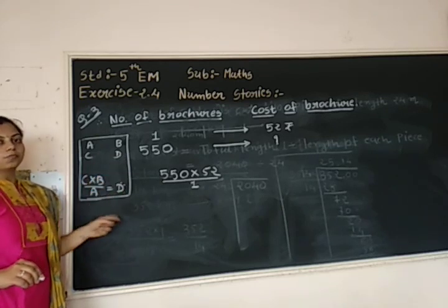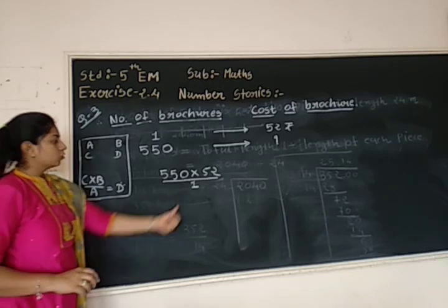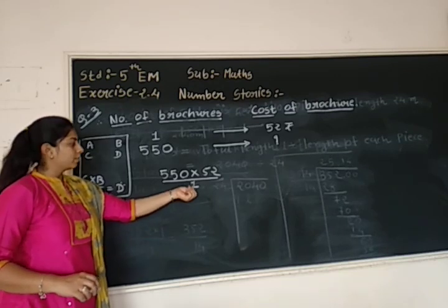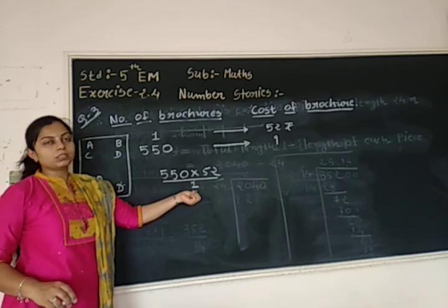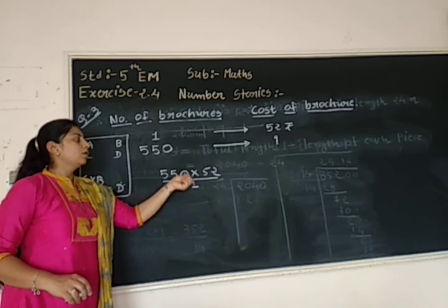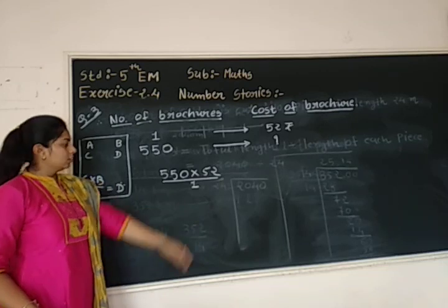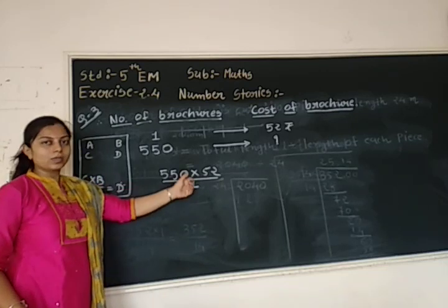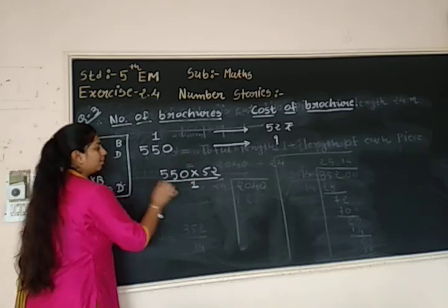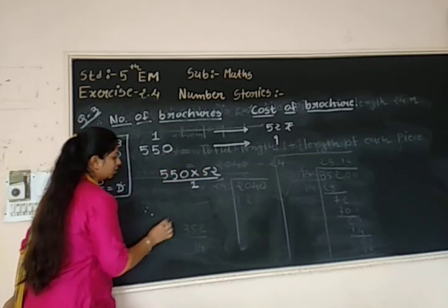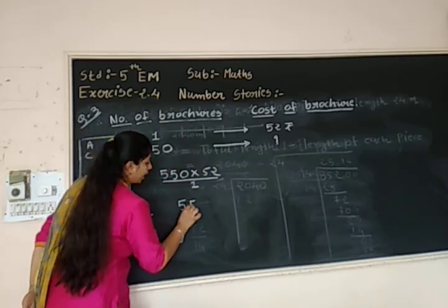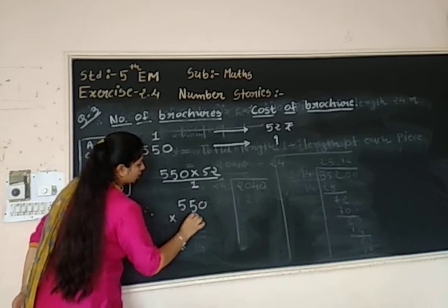So denominator is 1. There is no need to perform division because if you will divide anything by 1 you will get the same number. So no need to write this one in the denominator. Simply multiply 550 by 52. That is the multiplication. So 550 into 52.